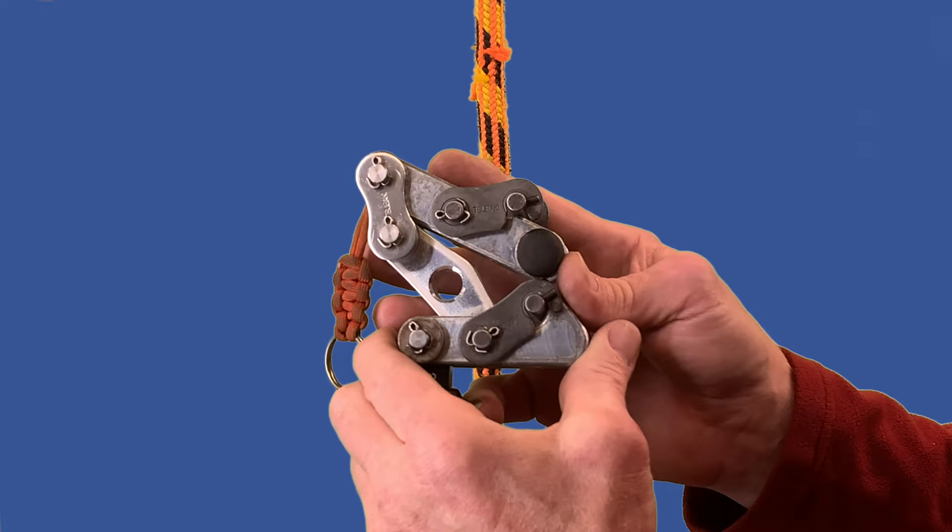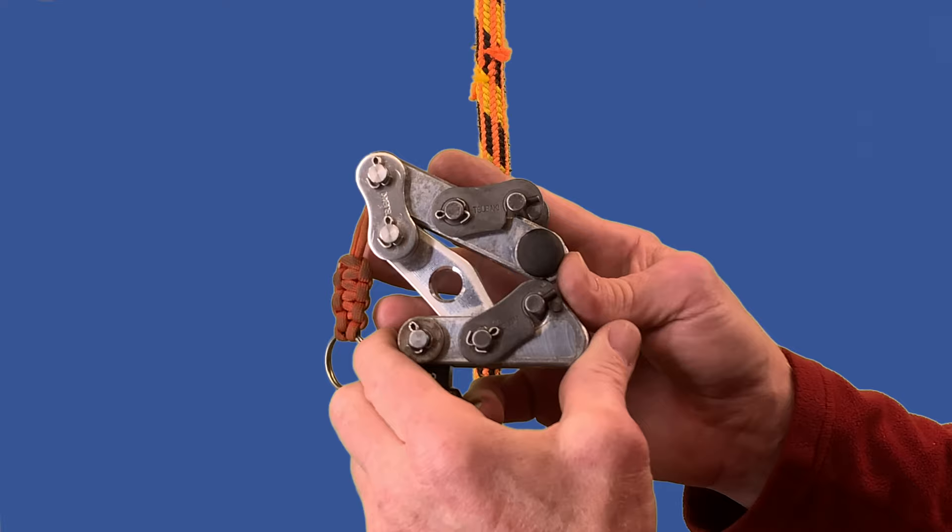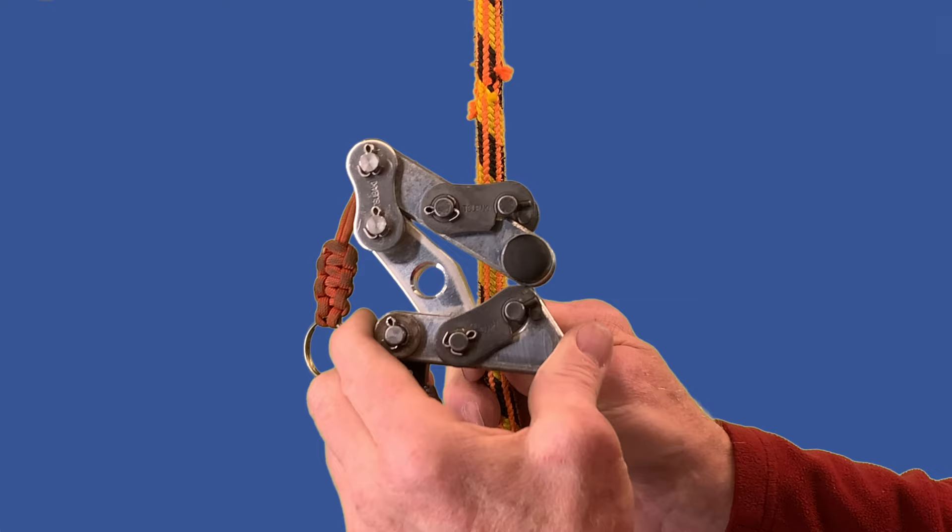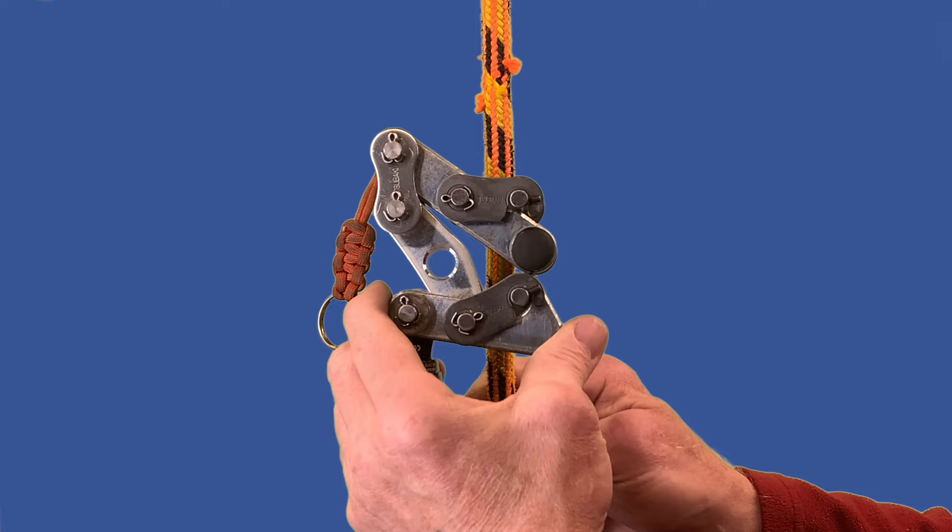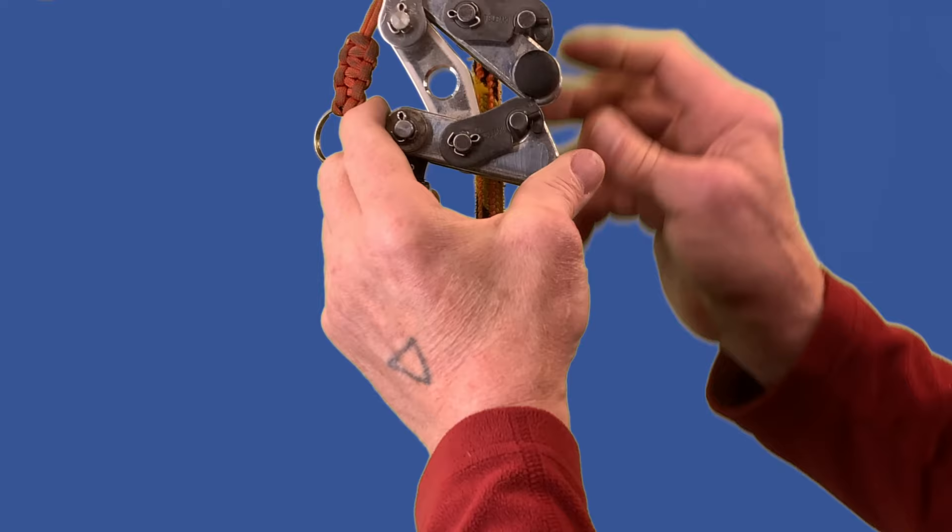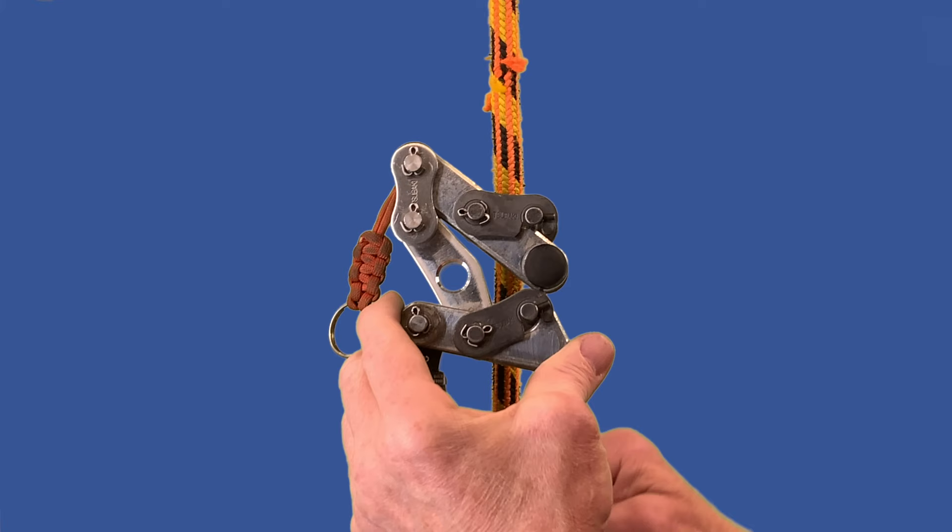This is a rope ascent device made for stationary rope technique. The rope does not move and there's no mechanical advantage. This ascension tool is also called a progress capture. It will capture your progress as you move up the rope, but it's also a descender that will allow you to descend back down.